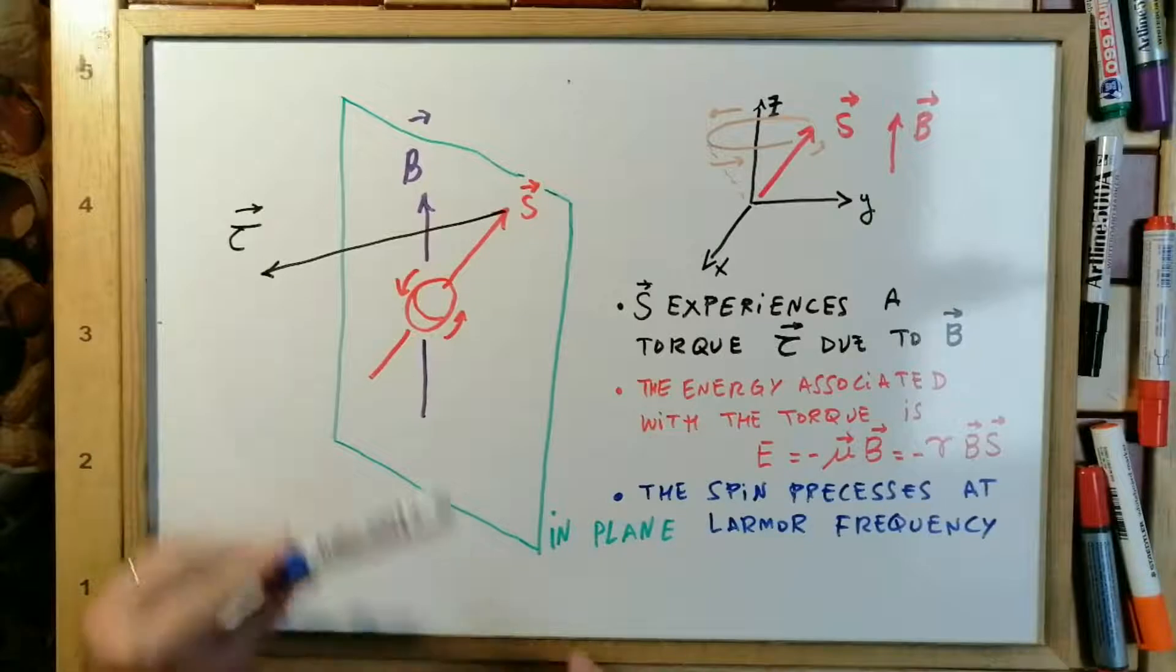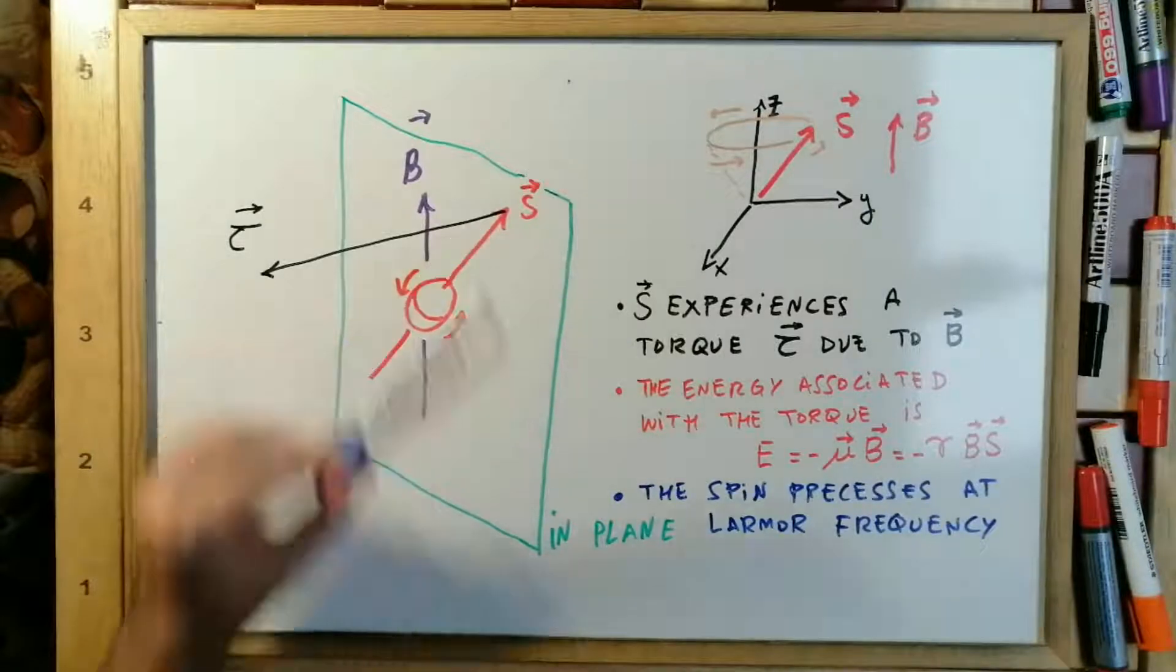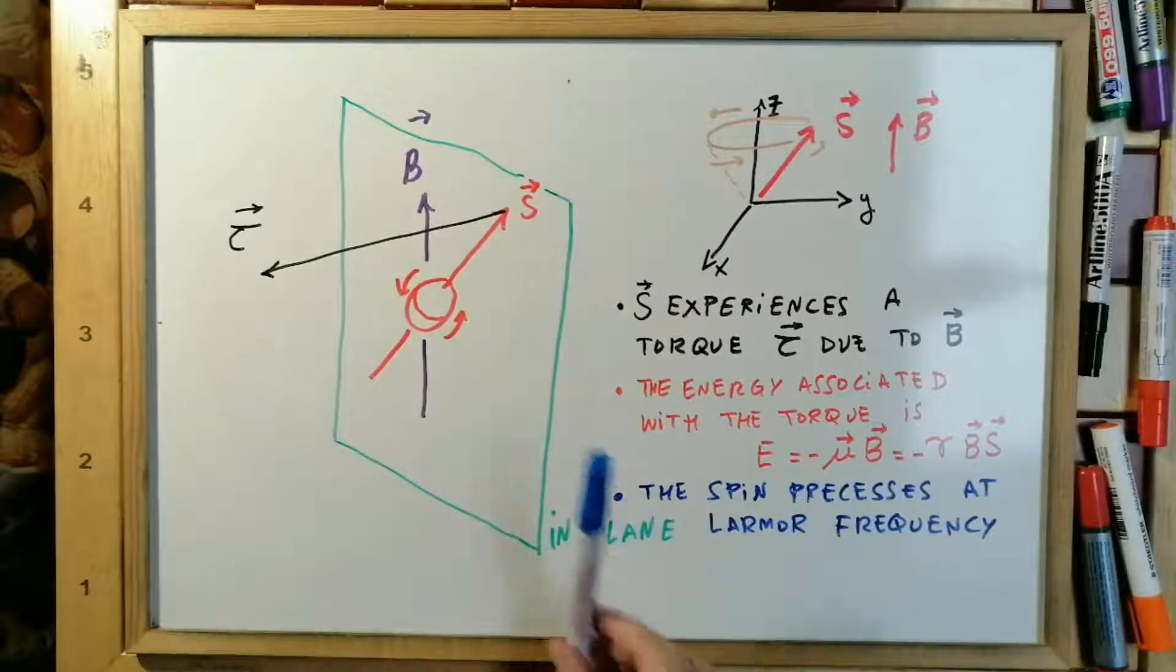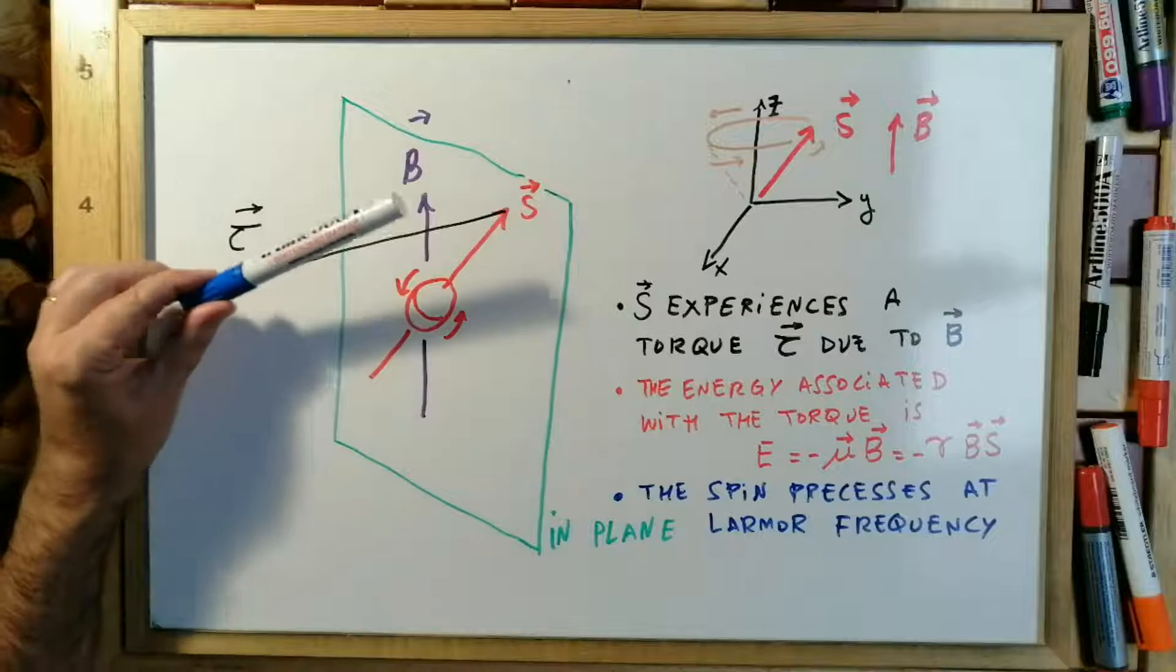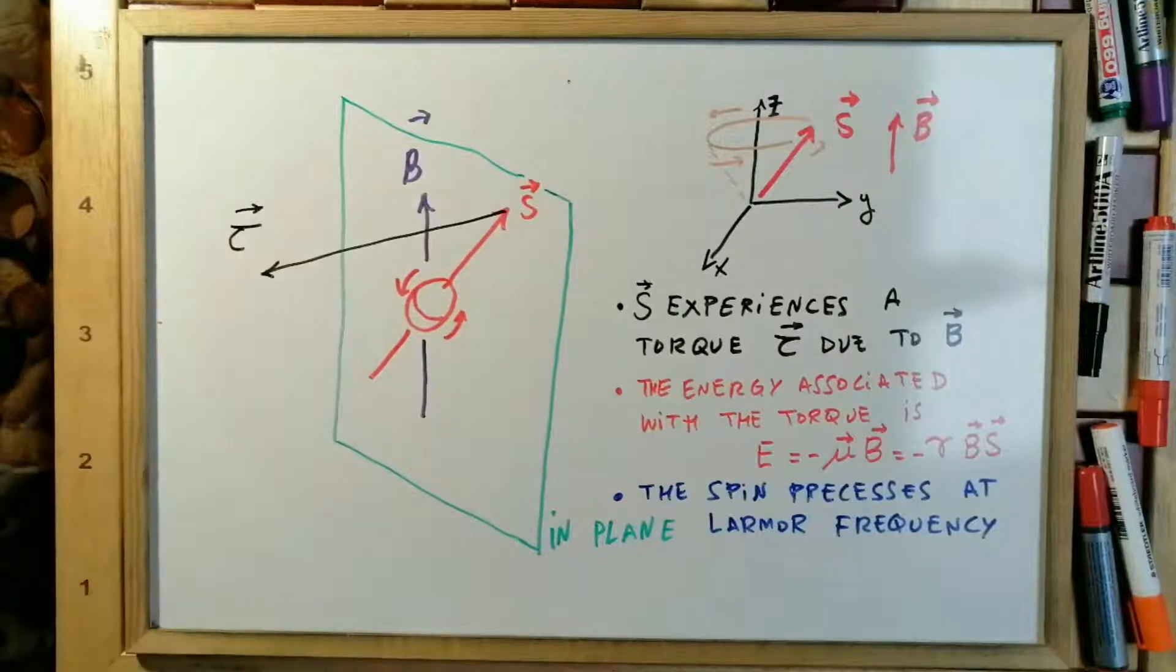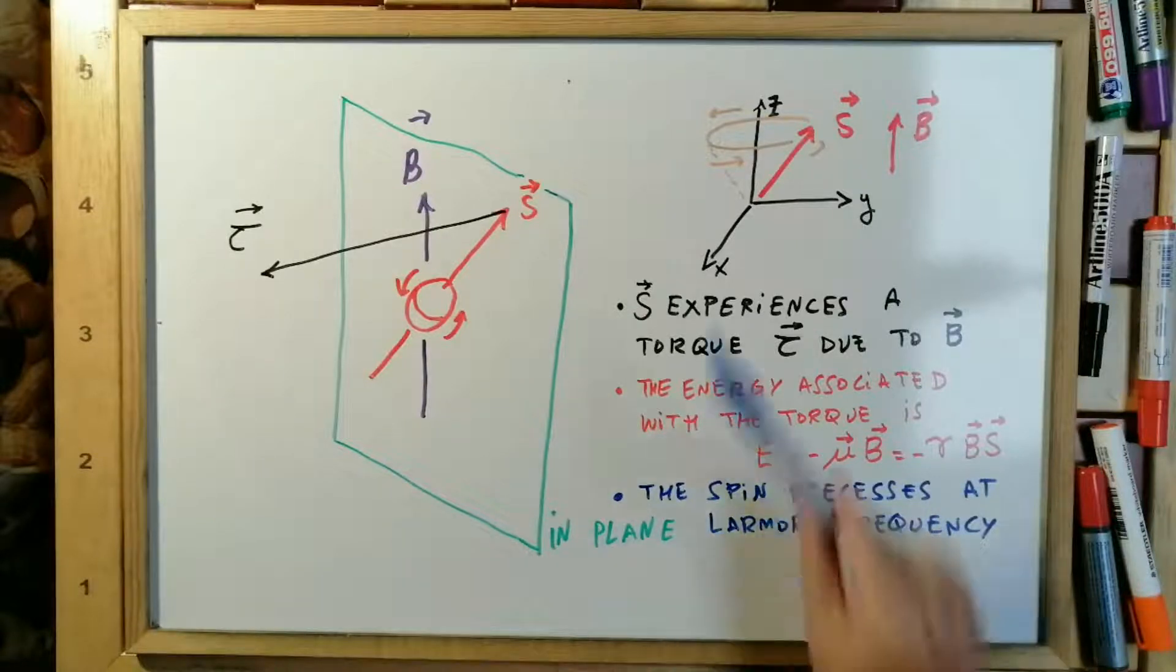The particle has a magnetic moment and is placed in a magnetic field. The spin experiences a torque due to the magnetic field. The energy associated with the torque is given, and as a result, the spin precesses at the Larmor frequency.